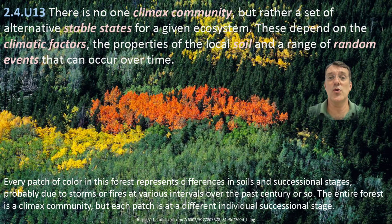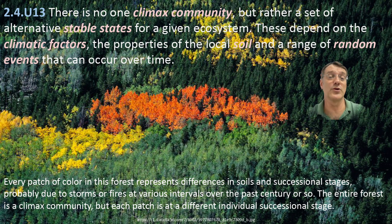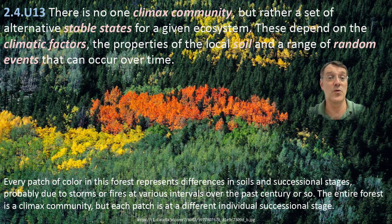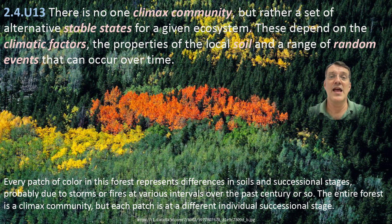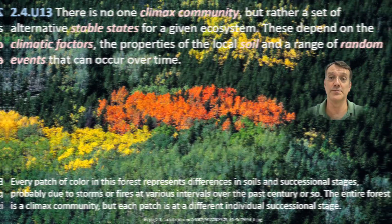There is no single climax community, but rather a set of alternative stable states for a given ecosystem. This forest shows patches of different colors representing different communities within what's considered a climax ecosystem. These variations arise from differences in soil conditions, microclimate, and past disturbance events like storms that may hit one part of the ecosystem and leave other parts alone.